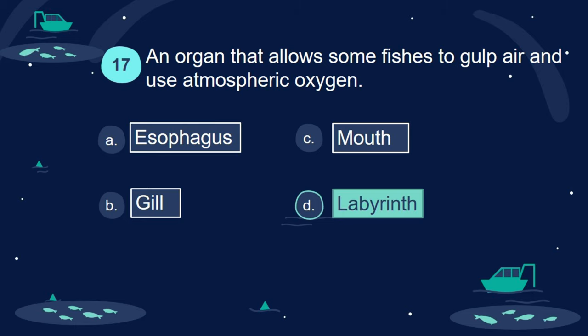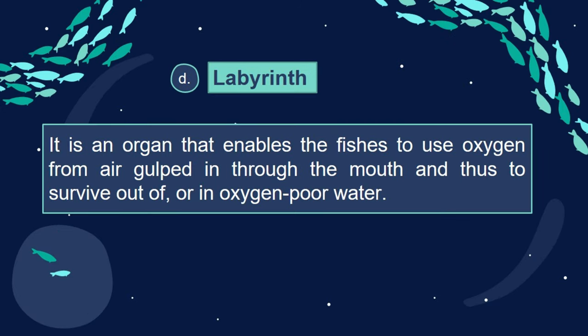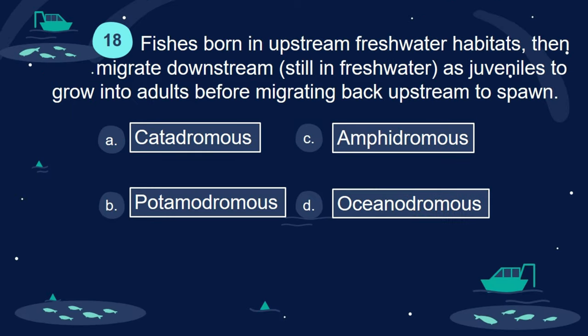Answer: D. Labyrinth. It is an organ that enables fishes to use oxygen from air gulped in through the mouth and thus to survive out of, or in oxygen-poor water.